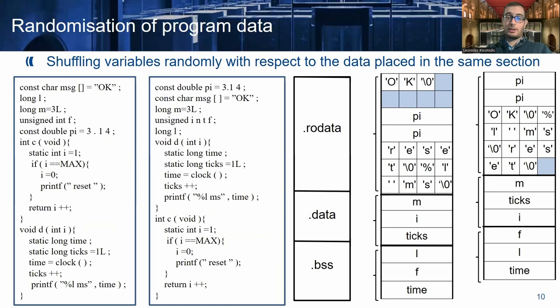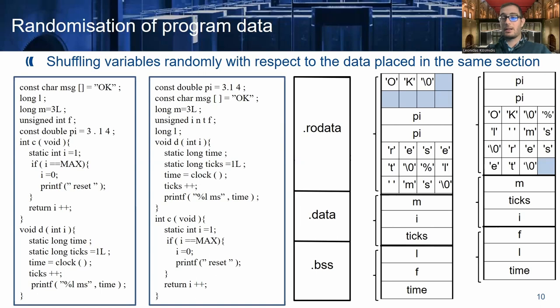In terms of global data randomization, the concept is the same but with a slight difference. Recall that global variables are placed in different segments depending on whether they are read-only, whether they are initialized, and if the initialization value is zero or not. So they end up in three different segments: .rodata, .data, and .bss. In order for randomization to be effective, TASA first separates each global variable to the segment it belongs to, and after that reorders the variables within each segment, so that the reordering has an impact on the final layout.